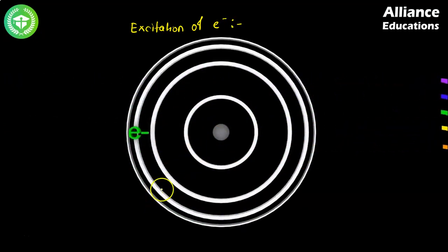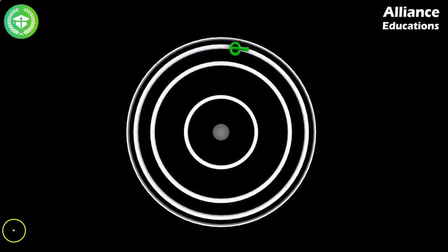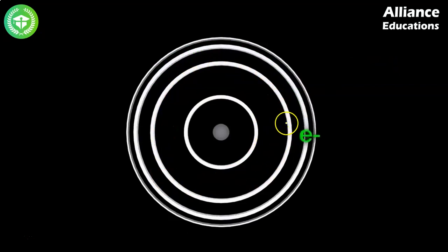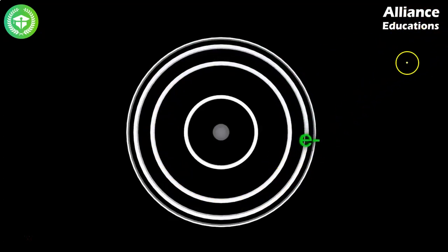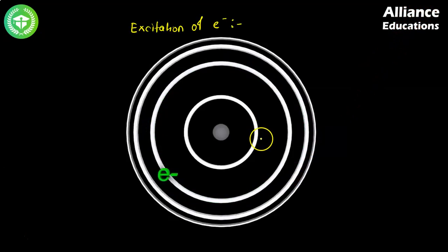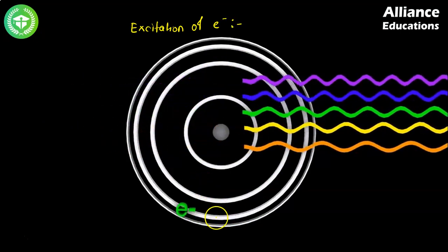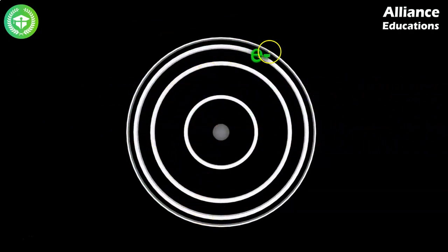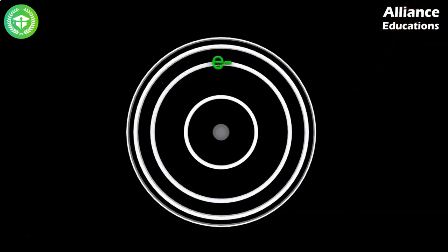इस particular example में red light absorb की जा रही है. Then electron ने फिर से energy lose किया, and excited state से ground state में return आ गया. जैसे ही ground state में आ रहा है, इसमें से red wavelength फिर से देख पा रहे हैं. So यहाँ पर again transition of electron from excited state to ground state, and इस transition में atom का जो electron है वो energy lose कर रहा है. So simple concept है — जब उसे energy मिल रही है तो वो excited state में जा रहा है, and energy lose करके ground state में return आ रहा है.